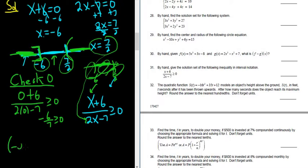So the final answer is negative infinity to negative 6, bracket, union 7 halves to infinity.